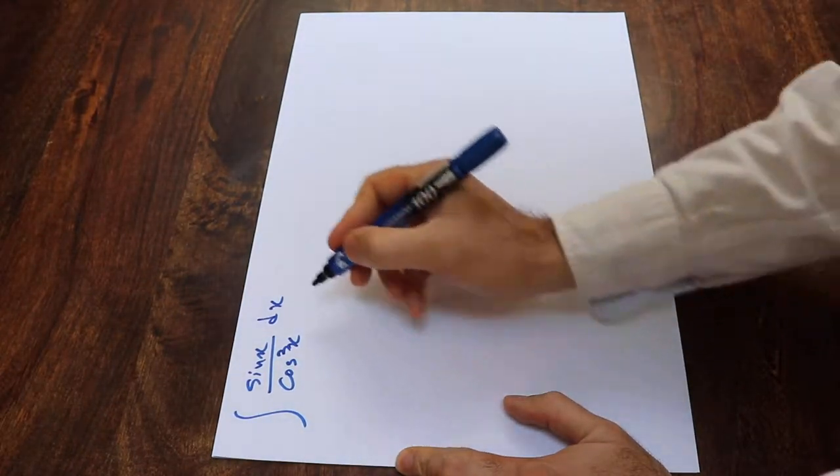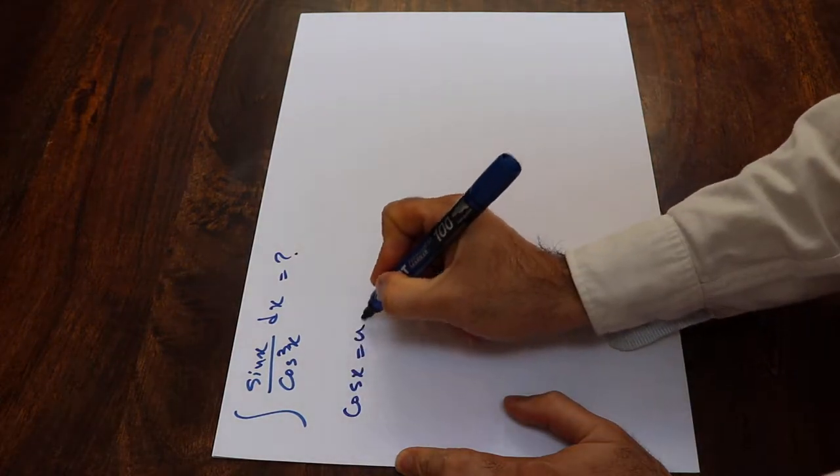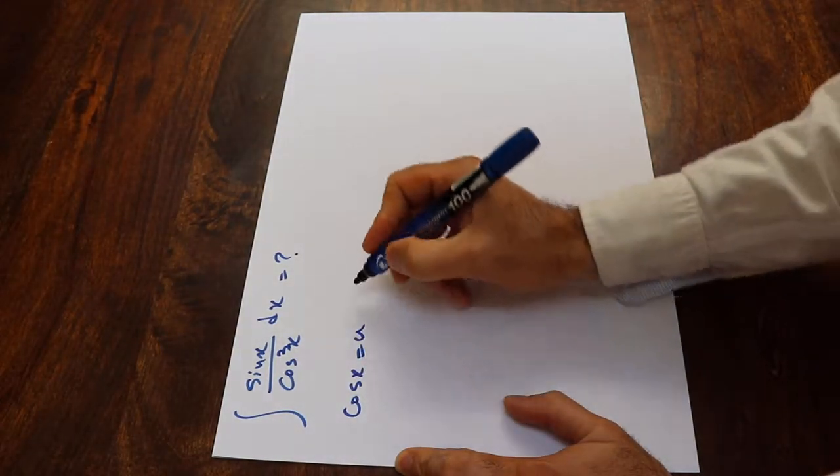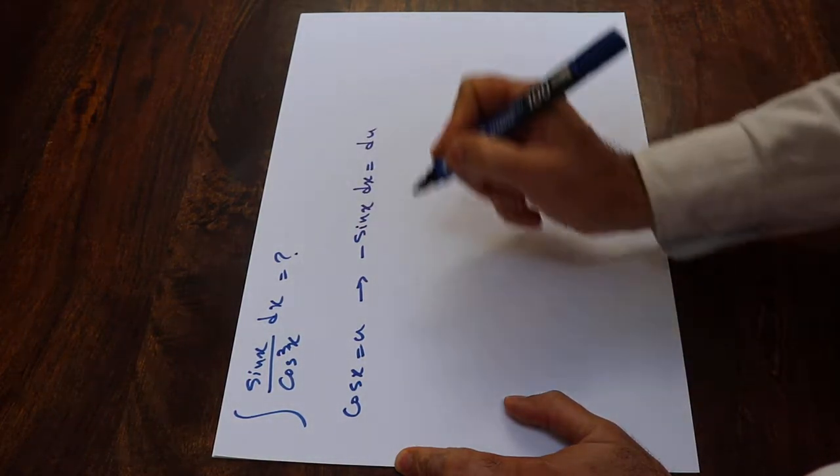You can solve this integral using the substitution rule. If you define cosine x as u, and take the derivative from each side of this equation, you'll get minus sine x dx equals du.